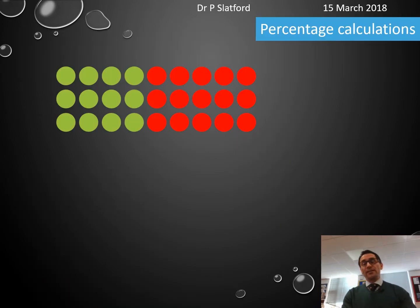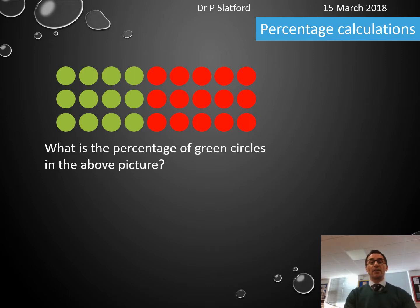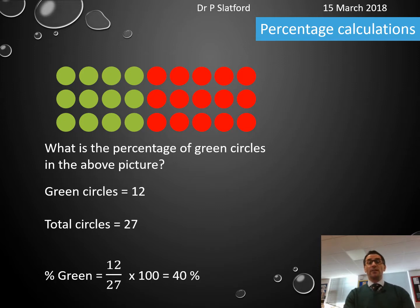In terms of percentage calculations, if I have green and red circles and ask what percentage are green, I can count 12 green circles out of 27 total. Therefore, 12 out of 27 circles are green, so 12 divided by 27 times 100 equals 44% of the circles are green.